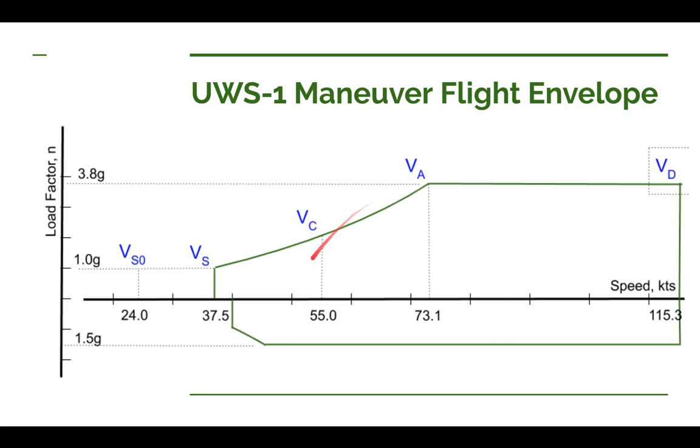Here's our diagram with a few more things in it. Our stall speed in the clean configuration is at 37.5 knots. Our stall speed when we have our flaps fully deployed is down here at 24.0. Naturally when we're stalling in straight and level flight or landing, it's going to be 1G, which is why this is at the 1G limit. This value increases following our lift equation.